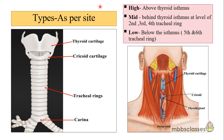High tracheostomy is done above the level of the thyroid isthmus. Mid tracheostomy is done behind the thyroid isthmus, at the level of the second, third, and fourth tracheal rings — and ideally, tracheostomy should be performed at this mid level. Low tracheostomy is done below the thyroid isthmus, at the fifth and sixth tracheal rings. It is very important to know the anterior relations of the trachea because tracheostomy is an emergency life-saving procedure.